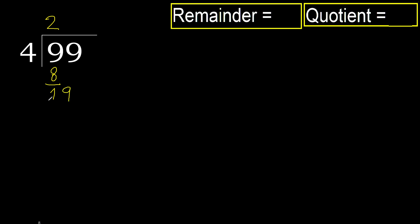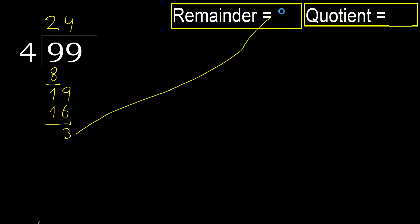19. 4 multiplied by 5 is 20 — 20 is greater. 4 multiplied by 4 is 16 — 16 is not greater. Subtract; there is no remainder digit, therefore finish it: the answer is 24 remainder 3.